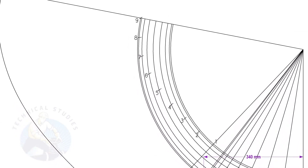Draw lines connecting these marks. Now we have the half layout of the cone. I suggest making a template of this layout and marking the other side, or you can complete the layout by repeating the same method.